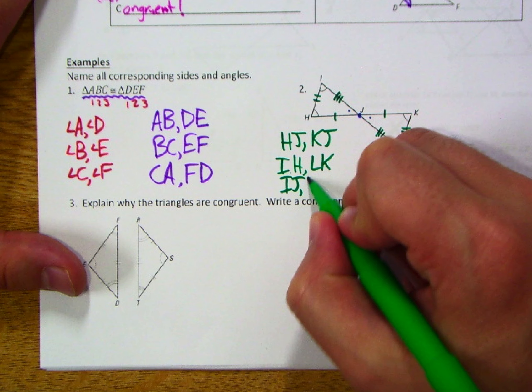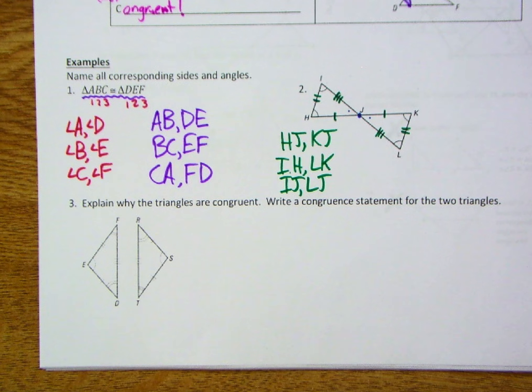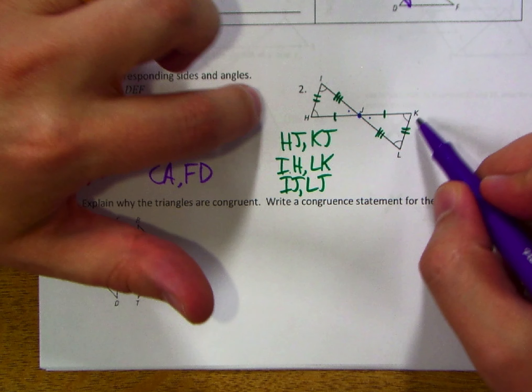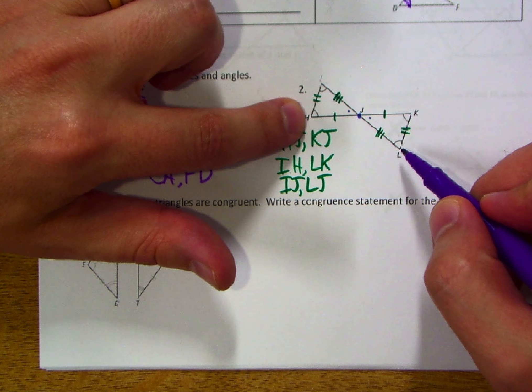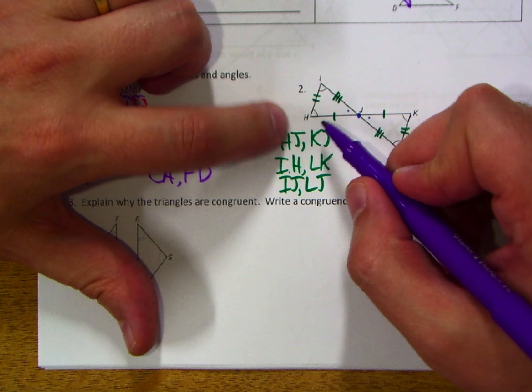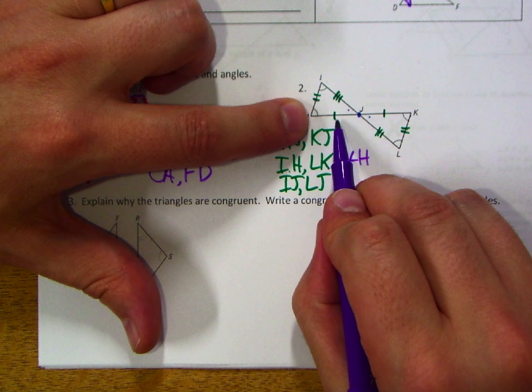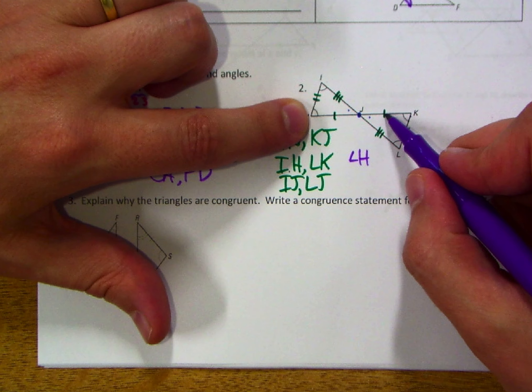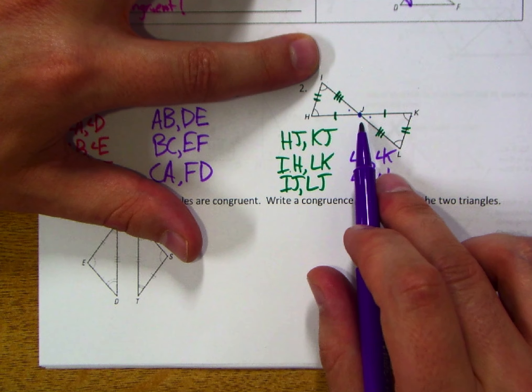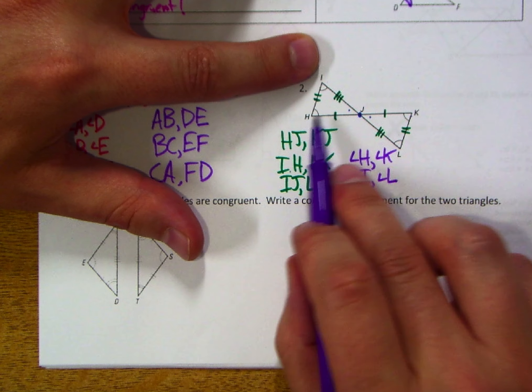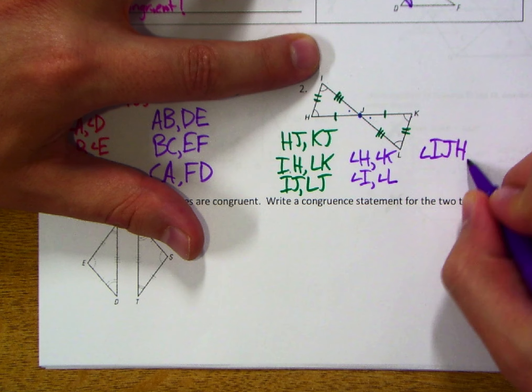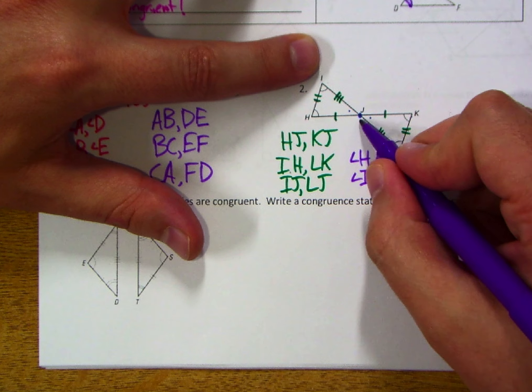Now let's match our corresponding angles. Angle H is between my single and double notch; between single and double notch here is K, so angle H and angle K are corresponding. Angle I is between a double and a triple, which matches angle L. And finally, I can't call it angle J and angle J because there are lots of angles at J, so we call it angle IJH and angle LJK.